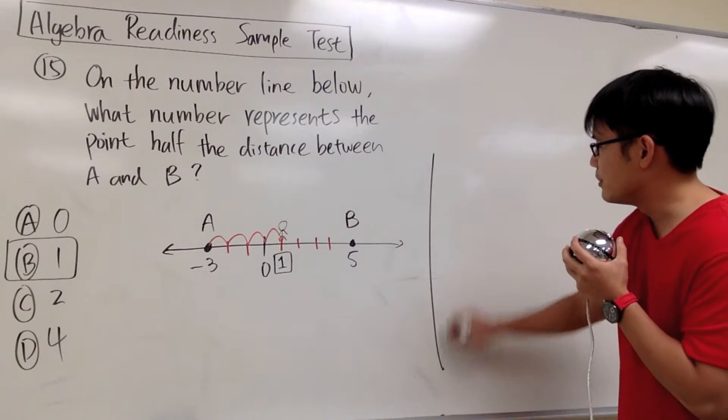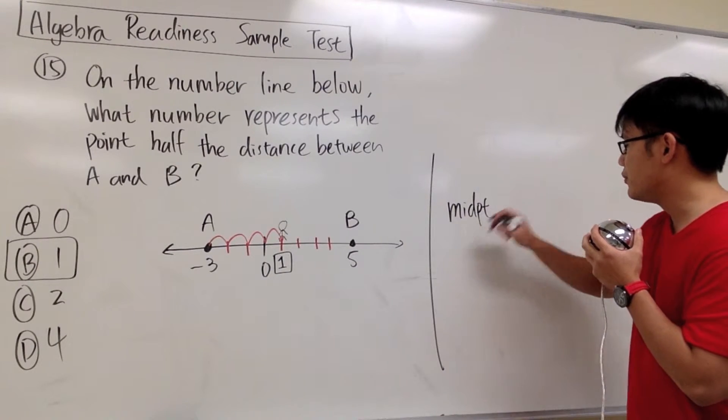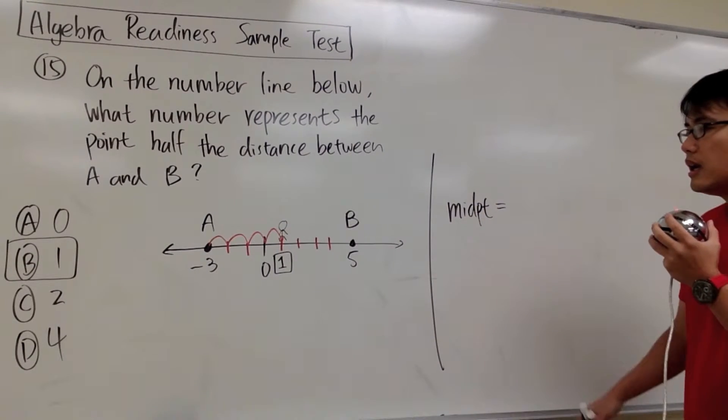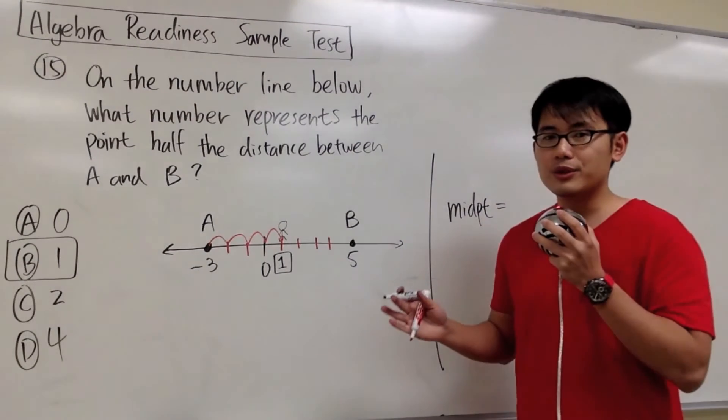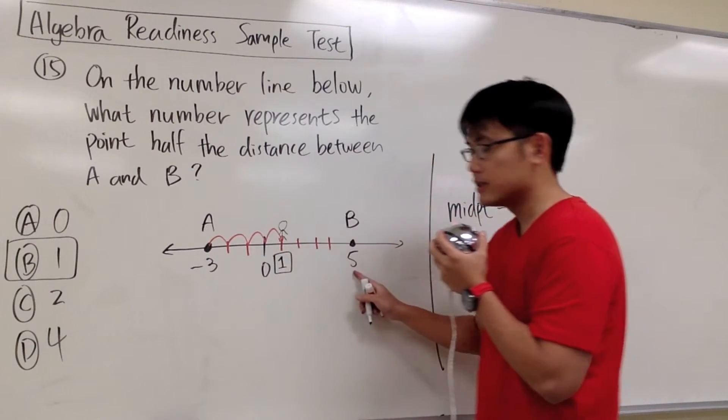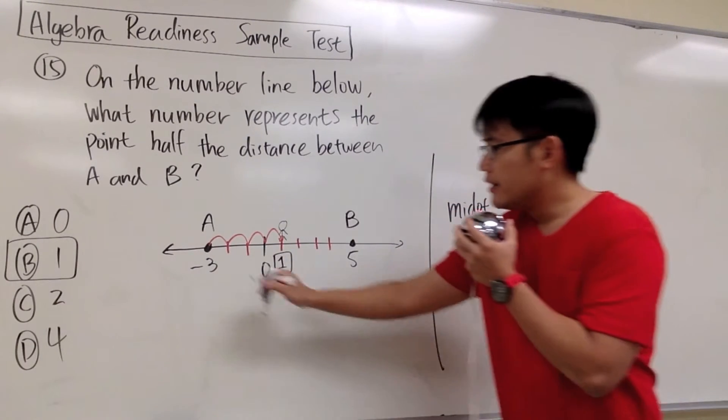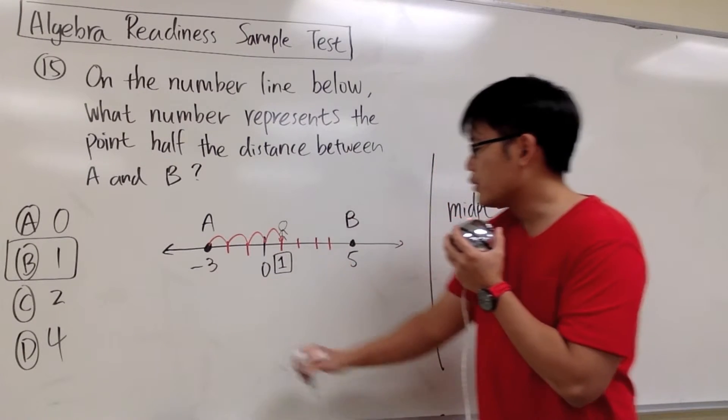This is how we can find the middle point. So I'll preview this as midpoint. And here is how we do it. We look at the endpoints and then we add them up first. The endpoints is at negative 3 right here.